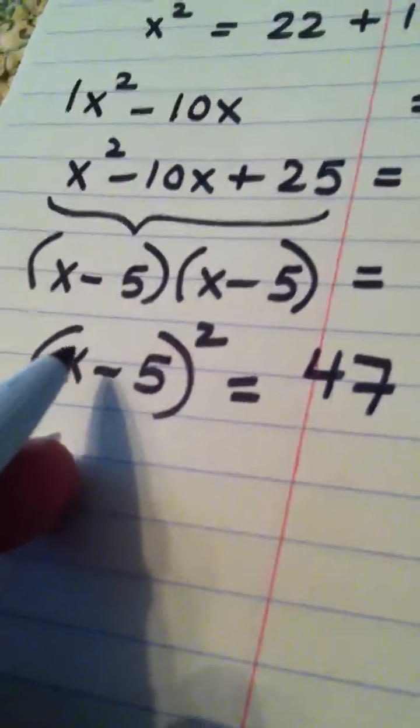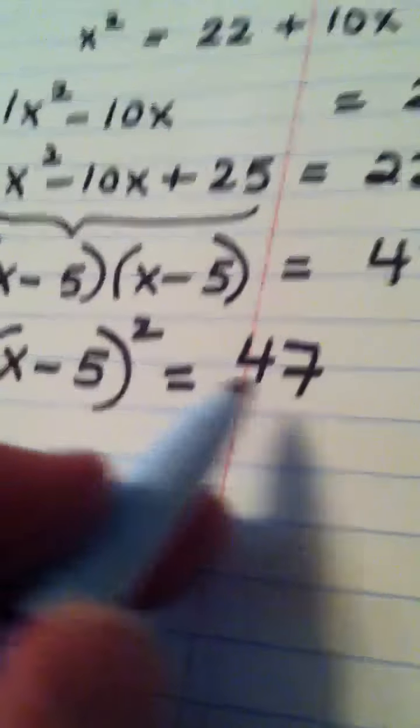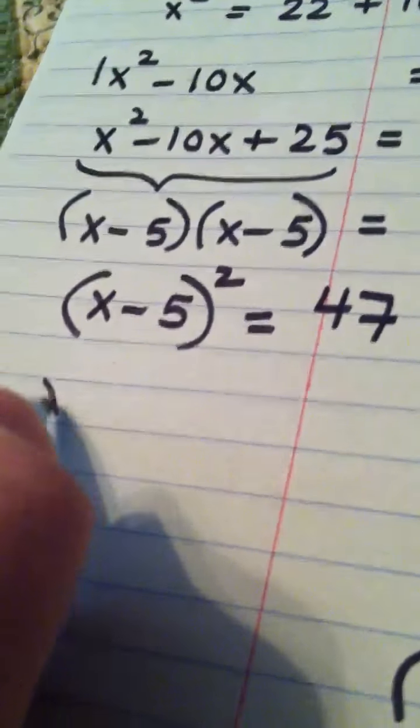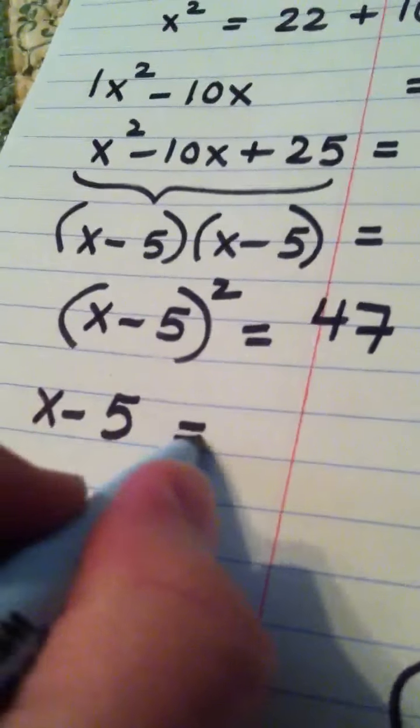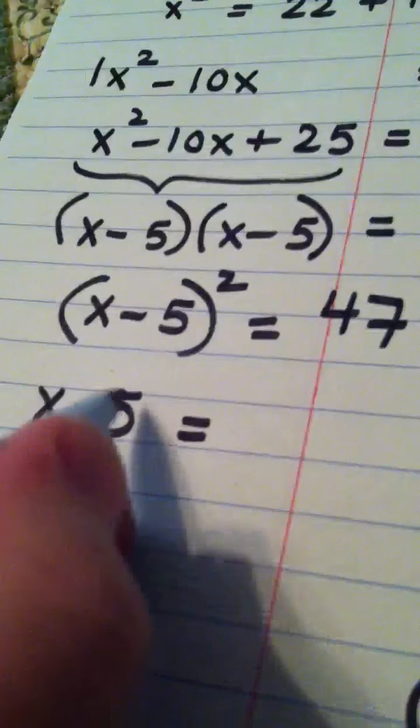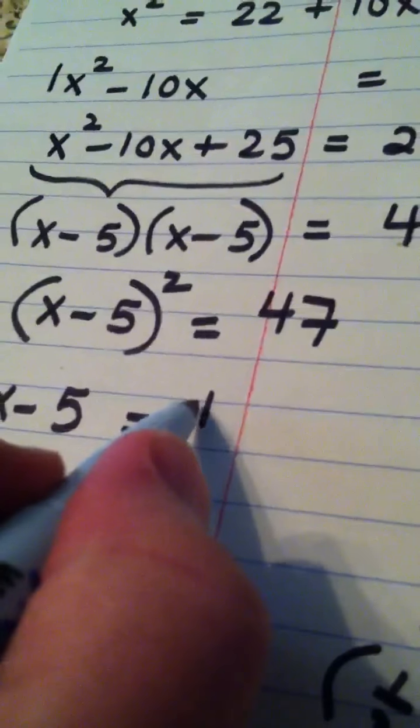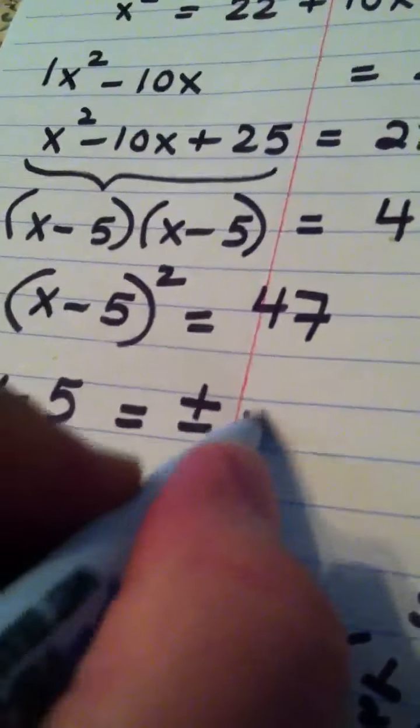Okay, we now apply the square root property. If blah blah squared equals a constant, then blah blah by itself, in other words blah blah here is x minus 5, is equal to, remember you put a plus or minus, and then you take the square root of 47.